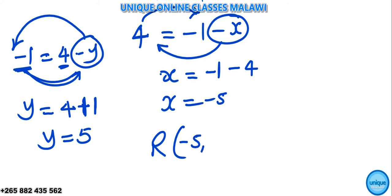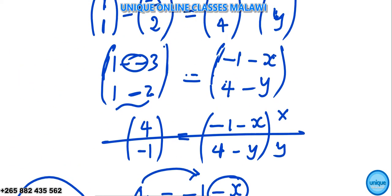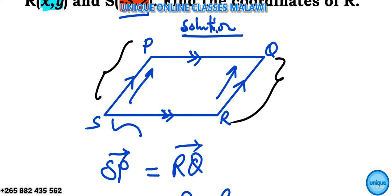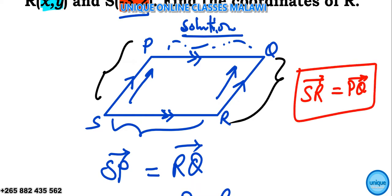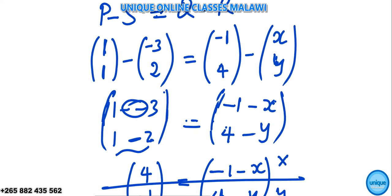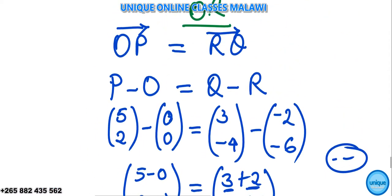Therefore coordinates of point R, R is negative 5, comma 5. You can use the other pair like using this side and that side as well. So you can try that one using the pair SR versus PQ. Try to do this.